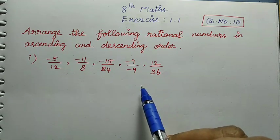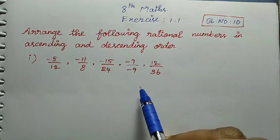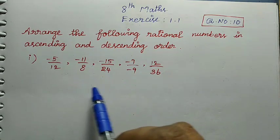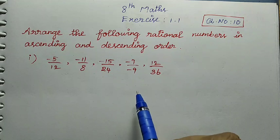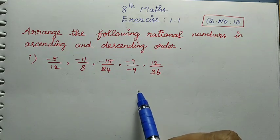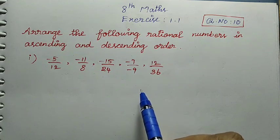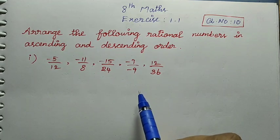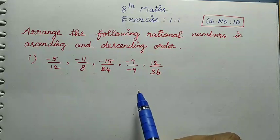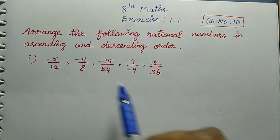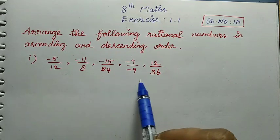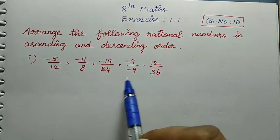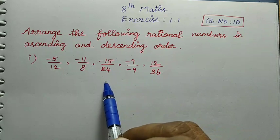To arrange in ascending and descending order, what we do is compare the rational numbers. We compare the denominator values to arrange in ascending and descending order. We can compare the rational numbers by making the denominator value the same — we need the highest common denominator.